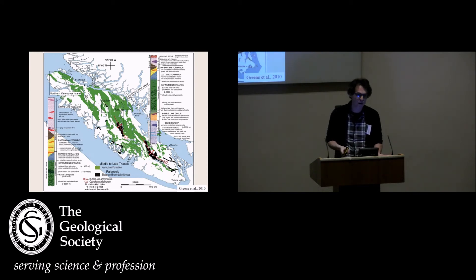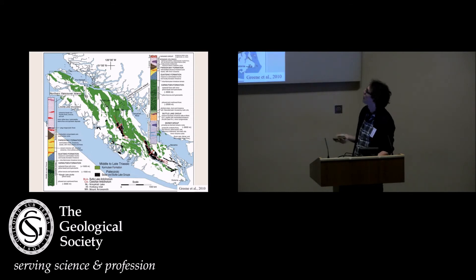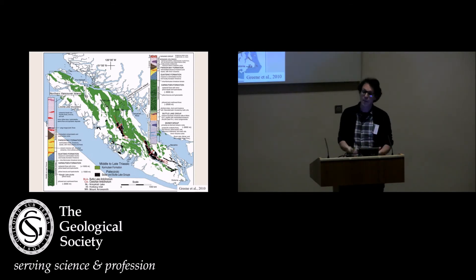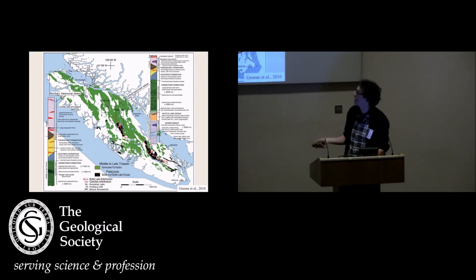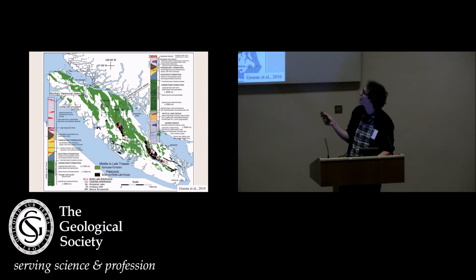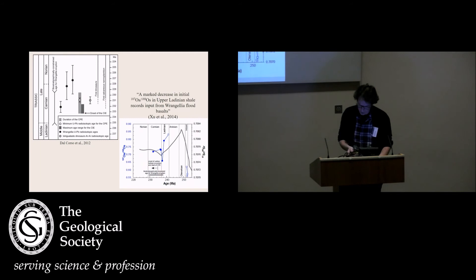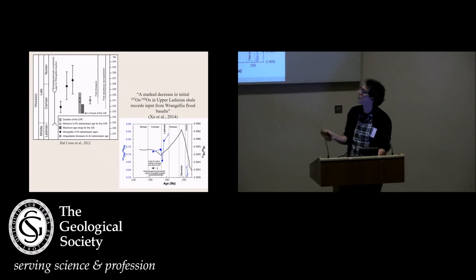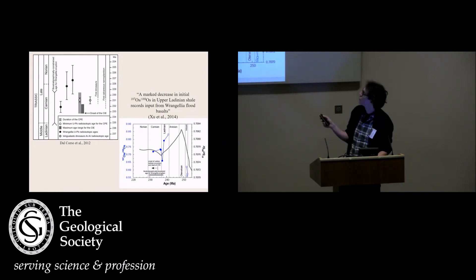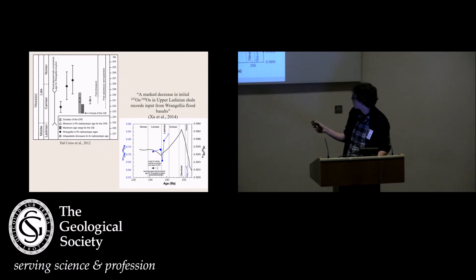Much of the Wrangellia material may have been subducted since the terranes were accreted during the Jurassic and Cretaceous. We can constrain the age of the Wrangellia LIP: on top of the last basalts in Vancouver Island are limestones containing ammonoids of late Tuvalian age, and the basalts lie on top of the Daonella beds, which contain Daonella bivalves of Ladinian age. So biostratigraphically the age is late Ladinian to early-late Carnian. Uranium-lead isotope data — though with large errors — agree, and recent osmium isotope data suggest the onset was at the latest Ladinian, near the Ladinian-Carnian boundary.